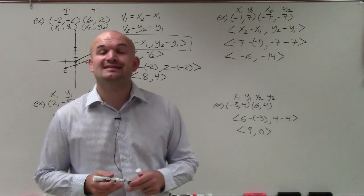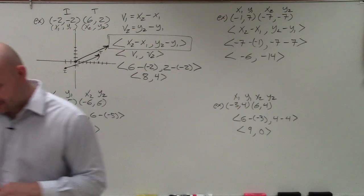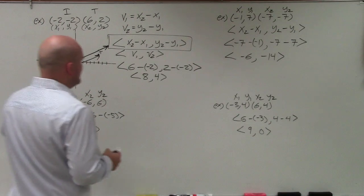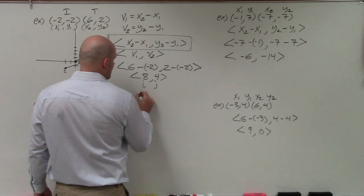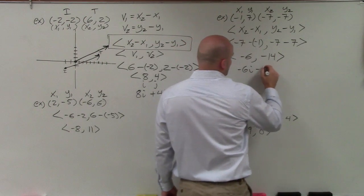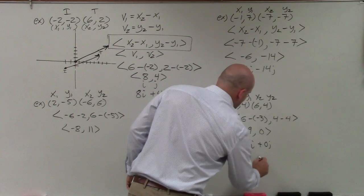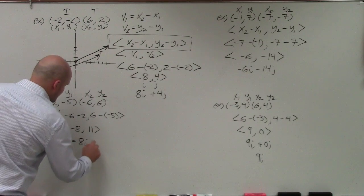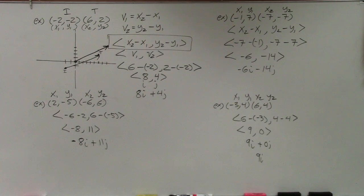So there you go, ladies and gentlemen. That is how you take an initial point and a terminal point and write them as a vector in component form. Thanks. Oh, you know what? I'm just going to add one thing. If you wanted to write these as a linear combination, just think of this as i and that is j. So we could say 8i plus 4j. Negative 6i minus 14j. 9i plus 0j, which is just 9i. I didn't have to do this, and I just figured I would do this for you. Just another way to write your vectors as linear combinations, if that was a problem that ever came up.